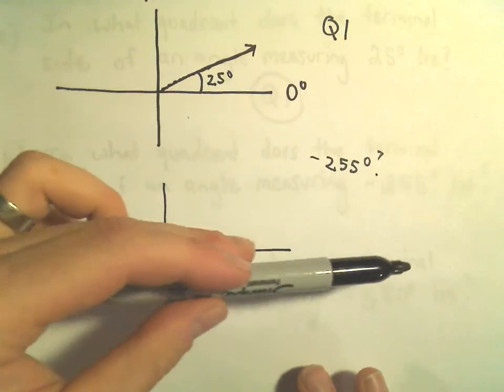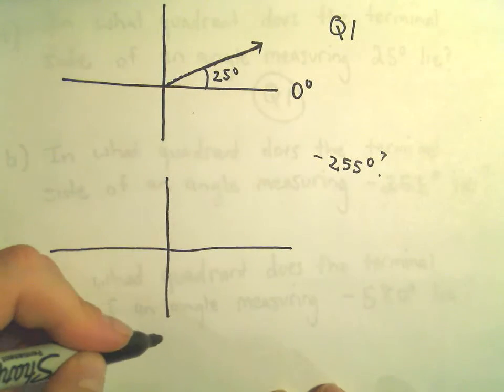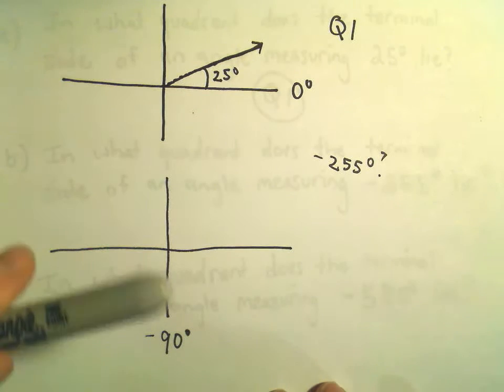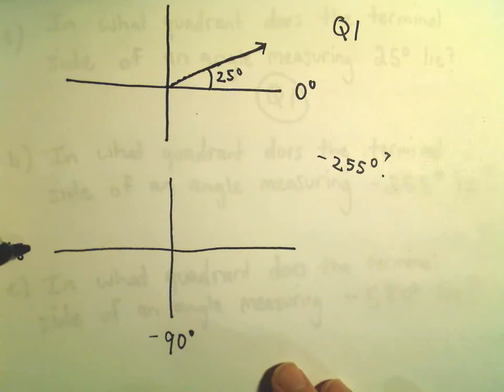We're doing negative angles. So 0 degrees, this will be negative 90 degrees at the bottom. If we go to the negative x-axis, that'll be negative 180 degrees.